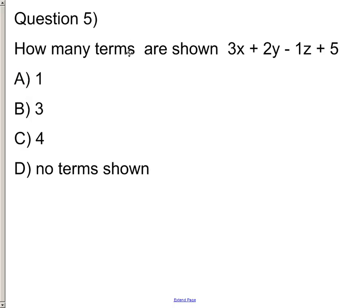Question five: How many terms are shown in 3x + 2y - 1z + 5? Well, plus sign, minus sign, plus sign. Here we go. One term, two terms, three terms, 4. C is the right answer. Here we go. Thank you.